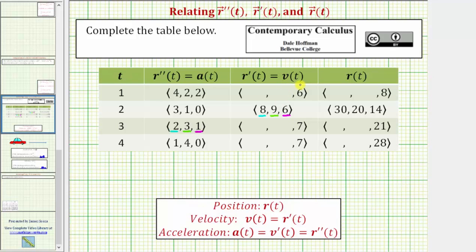Focusing on the starting velocity of eight meters per second in x, we know for the next one second the acceleration is two meters per second squared, which increases the velocity by two. Eight plus two is 10. At t equals three seconds, the velocity in the x direction is now 10 meters per second. The starting velocity in the y direction is nine meters per second, and then for the next one second the acceleration is three meters per second squared, which increases the velocity by three. Nine plus three is 12. At t equals three seconds, the velocity in the y direction is now 12 meters per second.